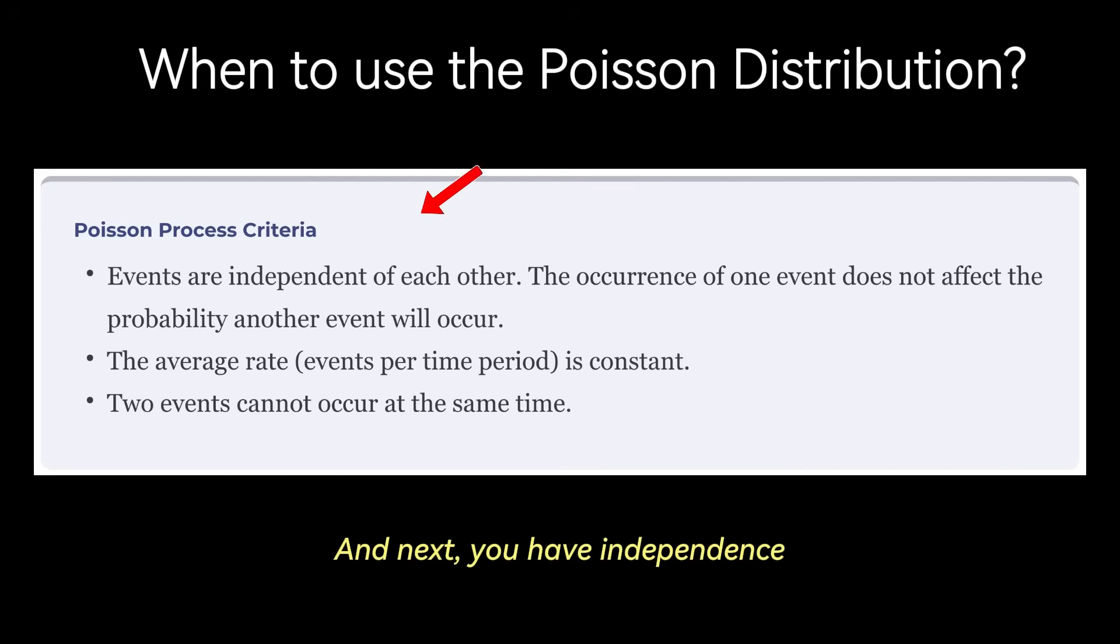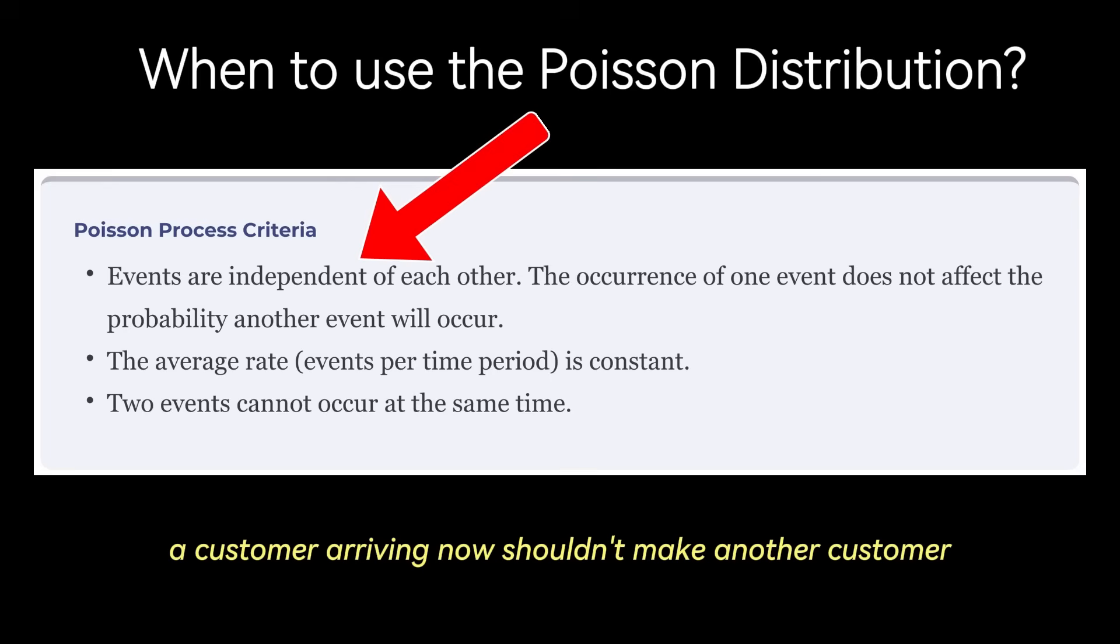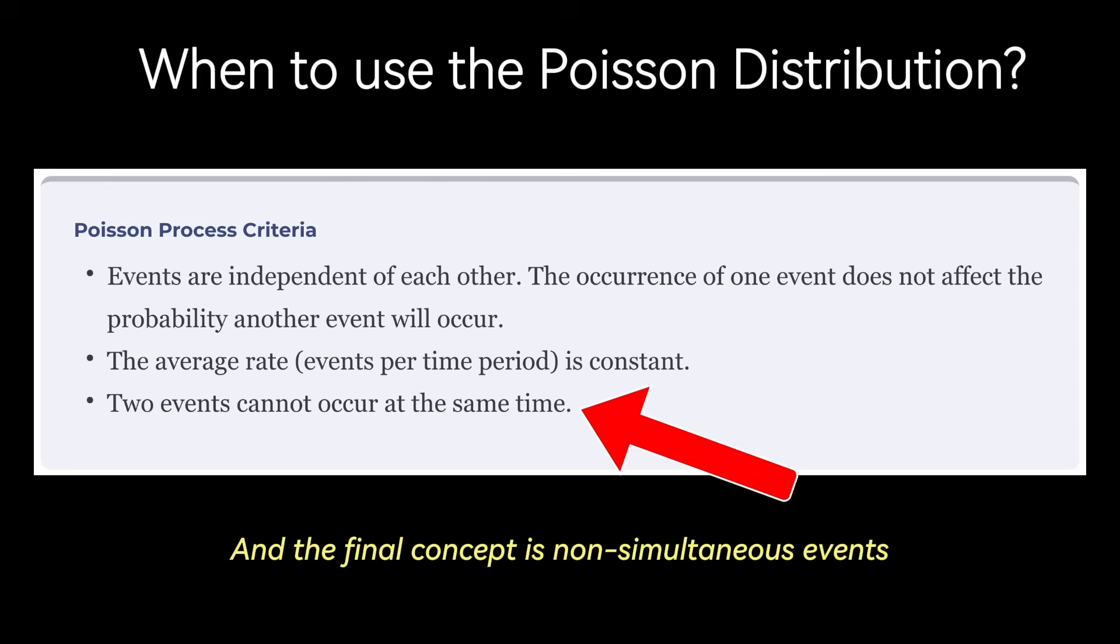And next you have independence. The occurrence of one event must not affect the probability of another event occurring. For example, a customer arriving now shouldn't make another customer more or less likely to arrive in the next minute. And the final concept is non-simultaneous events. Two events cannot occur at precisely the same instant. There is always some, however small, time or space separating them.